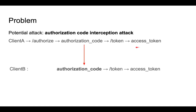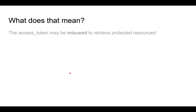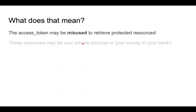However, in this scenario, it's the wrong application that received the authorization code. And now this wrong application may use this code to exchange it for an access token at the token endpoint, and this client may use this access token. It means that this access token can now be misused to retrieve protected resources, and these protected resources could include private pictures or your money in the bank.